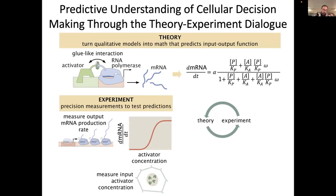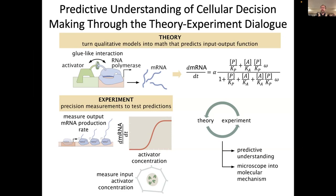The idea is that we're dealing with a cycle, where theory is there to make experimentally testable predictions. Experiments are explicitly designed to test those predictions and to inform the next round of theoretical modeling. The claim is that this sort of dialogue isn't just a means towards reaching predictive understanding, but also can be used as a microscope into molecular mechanism.